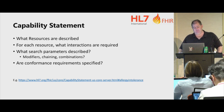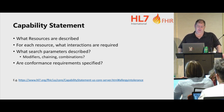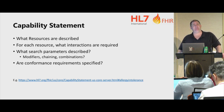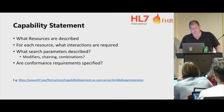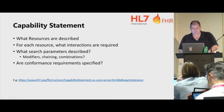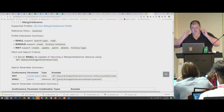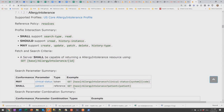Does the implementation guide say anything about modifiers, chaining, and combination parameters? Lots of implementation guides don't go to this level of detail. Does it matter that they don't? Do you specify conformance requirements, or does the implementation guide specify conformance requirements, and if it does, do you agree with them? Here's an example of a typical capability statement resource.